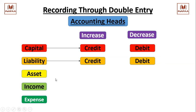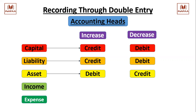As assets are the opposite to liability - liability is something which a business has to pay to someone, while an asset is something which the business owns, from which the business can have benefit. So it is opposite to liability, and the recording concept is also opposite. Whenever there is an increase in asset, we shall record it as a debit entry on the left side. Whenever there is a decrease in asset, we shall record it as a credit entry.